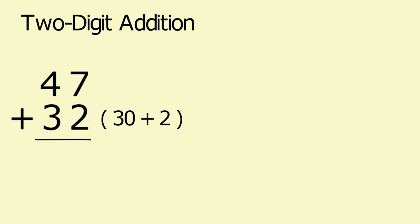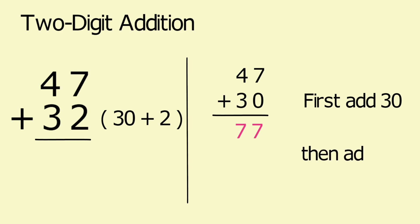To solve 47 plus 32, first add 30 to 47, then add 2. Hence we can write 47, then we will first add 30 to it, so we got 77. After adding 30, you have a simpler problem. You will just have to do 77 plus 2 which equals 79. Well, that was pretty simple.